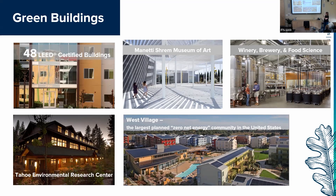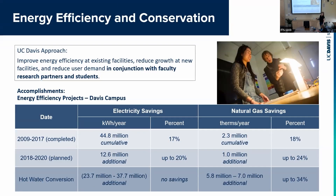We've been building 49 LEED-certified buildings, including challenging ones like a high alpine lab building, a museum of art requiring significant humidification and climate control, and a winery/brewery/food science building — the first to be LEED Platinum in the world. We've done a huge amount of work on energy efficiency and conservation, particularly on the Davis campus, and hot water conversion has the potential to be really important.